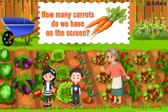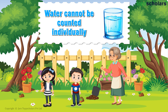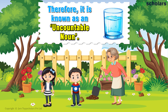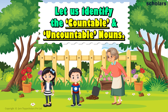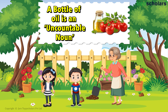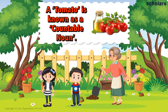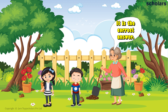How many carrots do we have on the screen? Three. Water cannot be counted individually, therefore it is known as an uncountable noun. Let us identify the countable and uncountable nouns. A bottle of oil is an uncountable noun, and a tomato is known as a countable noun. Well done, it is the correct answer.